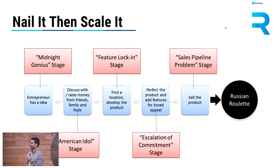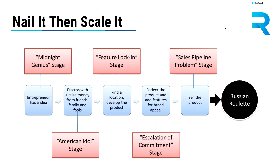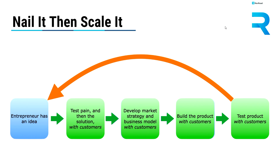Bottom line: if you haven't read The Lean Startup, read it. If you haven't read Nail It Then Scale It, go read it. But there's a better way to do entrepreneurship. The typical way is: I've got an idea, I'm going to run with it, build it, and then at the end get to the selling phase — and it's Russian roulette. I don't know if it's going to work because I didn't do the tough work to validate if there's really a pain and if there's really demand. The better way is to be testing your hypotheses the entire time, talking to potential customers to find out if the pain you believe exists really does exist.